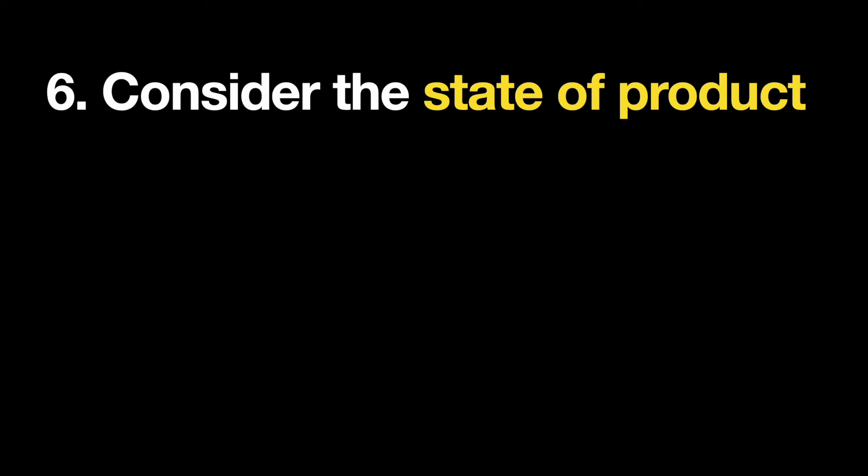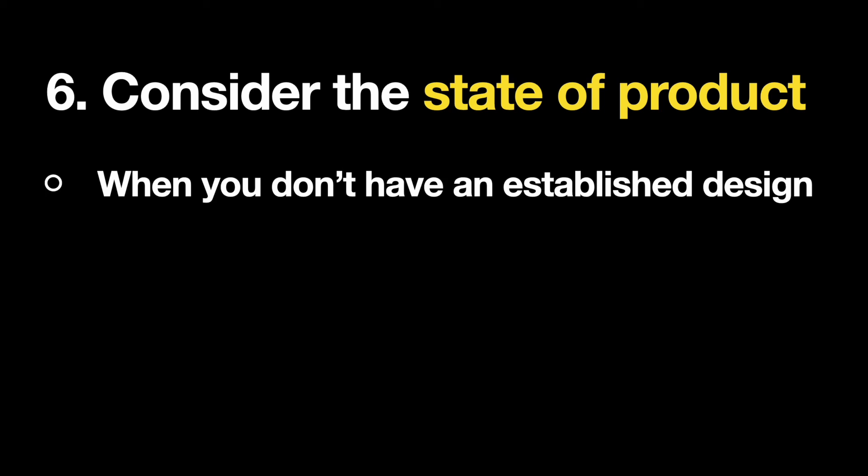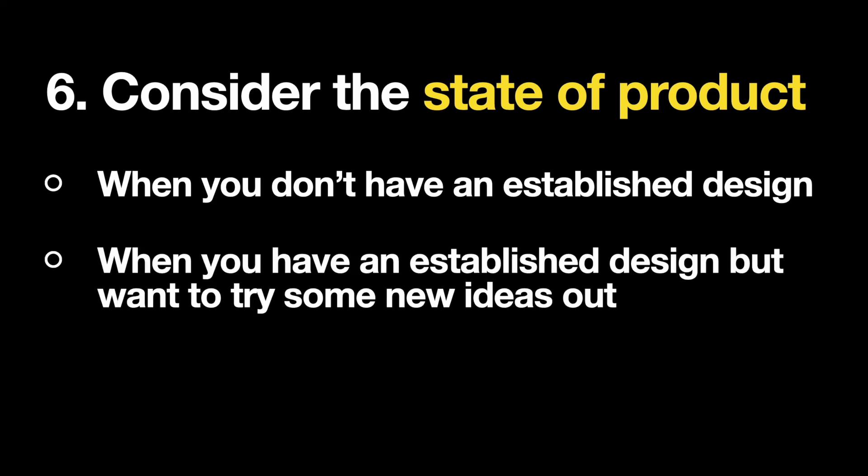Number six: consider the state of your product. The procedure of A-B testing varies depending on the state of the product. In the first scenario, when you don't have an established design and are designing a new product with several ideas, you want to treat all ideas equally and assign equal traffic weight to each solution. In the second scenario, when you have an established design but want to try new ideas, you might give your new page variants a smaller percentage of traffic than the existing solution — say, 60% to the original design and only 30% to new variations. By doing that, you minimize the risk that the new design will cause problems for your users.